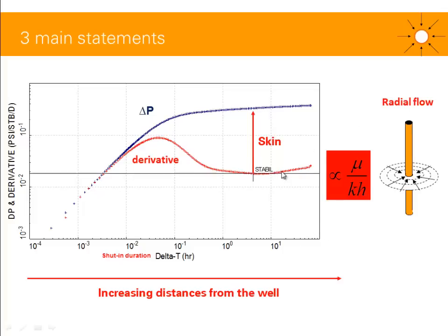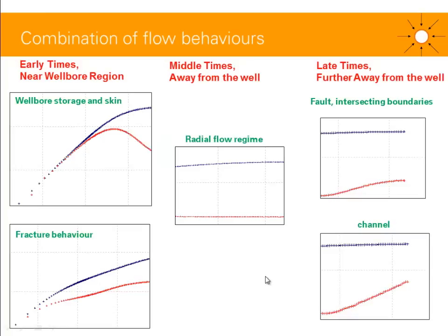A boundary will be represented by an increase in your derivative at late time. Quick recap — three main statements: a stabilization on your derivative could be indicative of radial flow regime in the horizontal plane; the level of stabilization is inversely proportional to KH (permeability times net thickness); the vertical separation between the two plots is indicative of skin; and delta T could be replaced by the radius from the well. We identify the radial flow regime in the derivative plot — this is the most important flow regime in well test analysis, giving you permeability and skin.